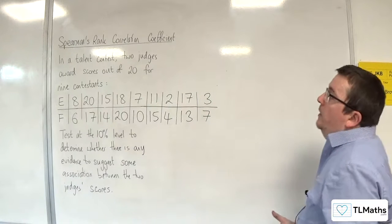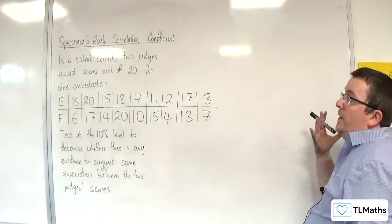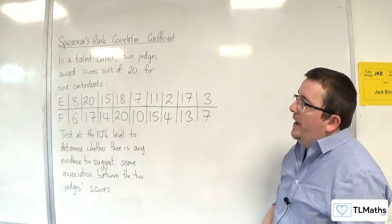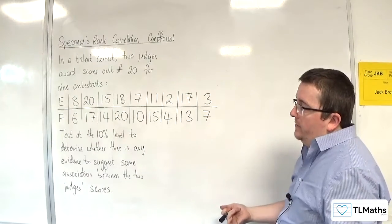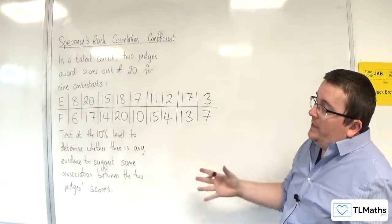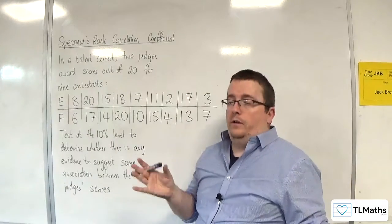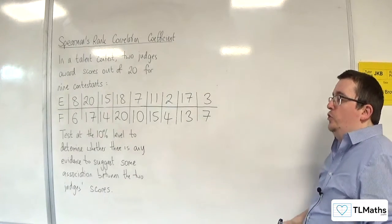In this third example, we have another talent contest where we have two more judges, E and F. They're awarding scores out of 20 again, but this time for nine contestants. We're going to test at the 10% level to determine whether there is any evidence to suggest some association between the two judges' scores.